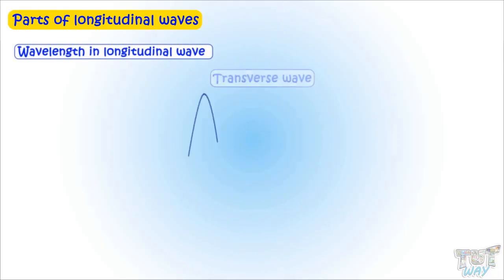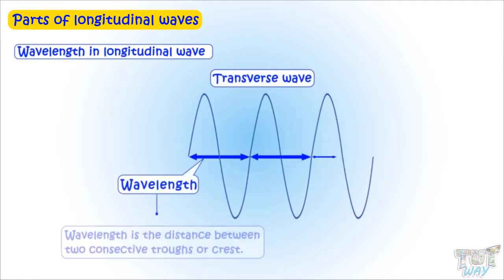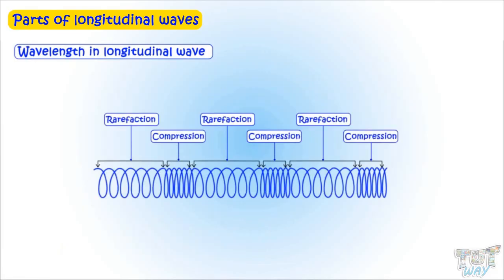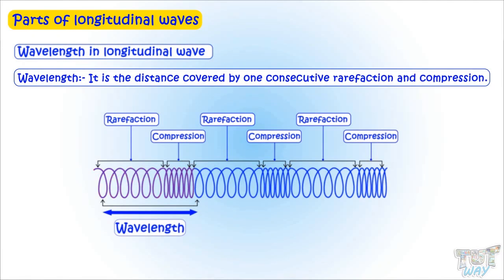Next is wavelength in longitudinal wave. Like we learned in case of transverse wave, wavelength is a distance between two consecutive troughs or crests. Similarly, in longitudinal waves, wavelength is a distance between two consecutive rarefactions or two consecutive compressions.